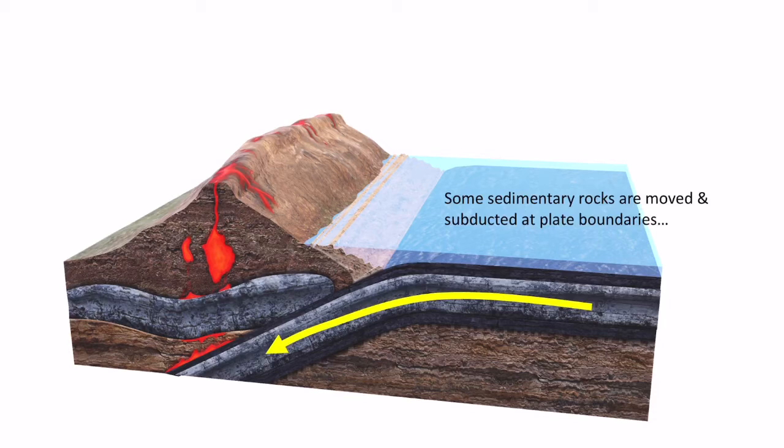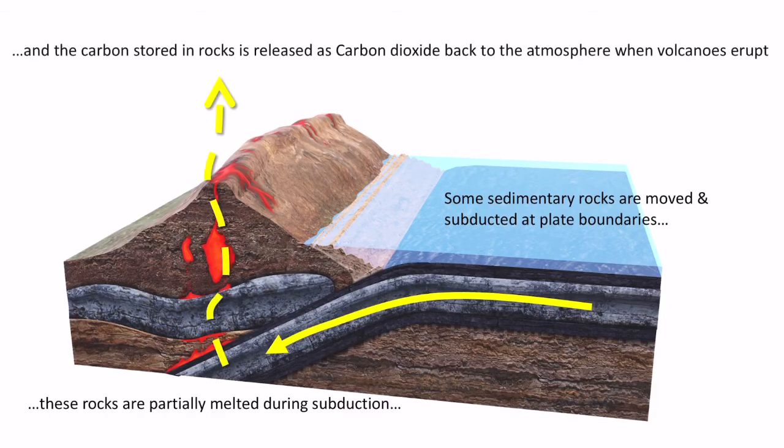When rocks are subducted and heat is supplied to them with friction, they will become melted, which is transforming those rocks. And in that process of transforming them, any carbon that's stored in the rocks is actually released as carbon dioxide when those volcanoes erupt. So the carbon that was in rock gets converted back into a gas and then released back into the atmosphere.